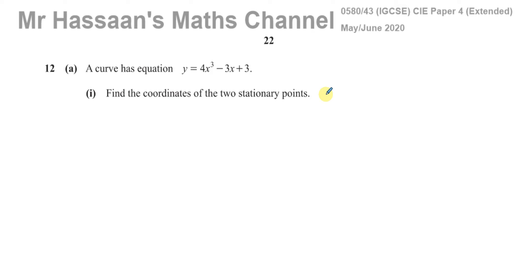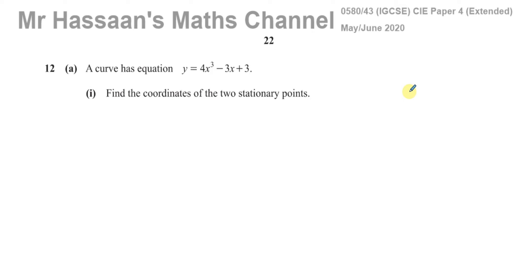This question is about differentiation, where you have to find the two stationary points. A stationary point is a place on the curve that has a zero gradient — where it turns. Prior to studying differentiation, we should have studied graphs of functions, and one of the graphs we should know how to sketch is the cubic curve.